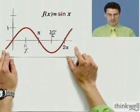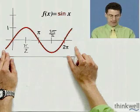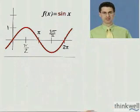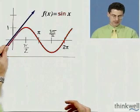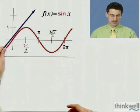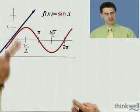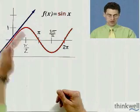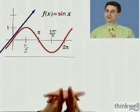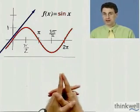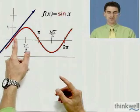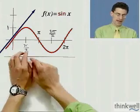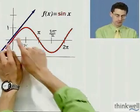Here again is the sine function. What I'd like us to do is take a look at what the slopes of the tangent lines are. If I put the tangent line right over here, you'll see that the tangent is positive, which means the slope is positive — so the derivative is positive. At this point, the derivative should be positive.